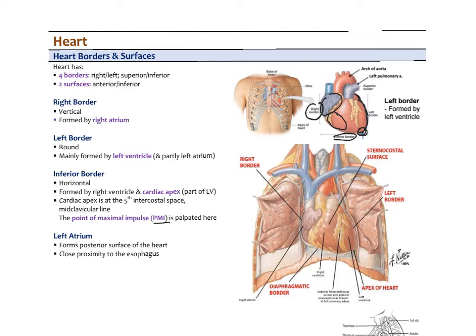The point where we feel the apex is called the Point of Maximal Impulse (PMI), and we can palpate the PMI there. The left atrium forms the posterior surface of the heart — you can't see it from the front — and it is in close proximity to the esophagus. The heart is asymmetrical relative to the midline of the body, sticking off more to the left, and it fills the space called the mediastinum, the space between the lungs, resting against the diaphragm.